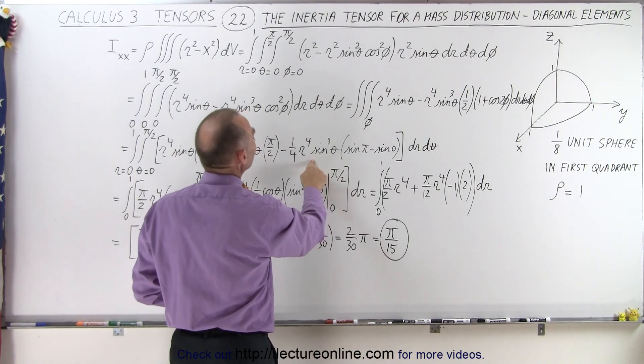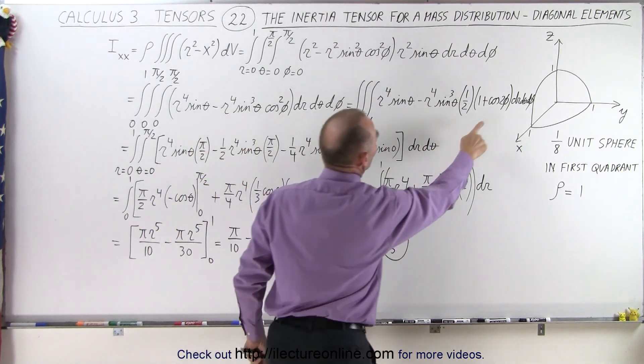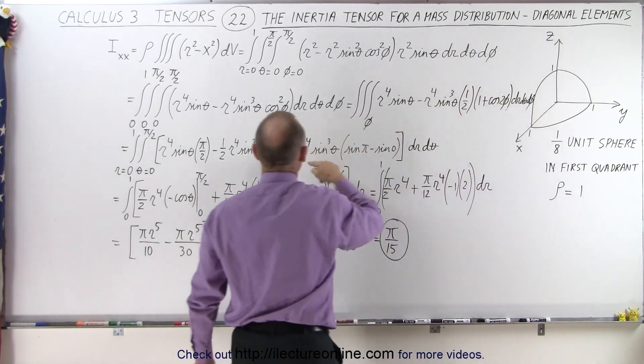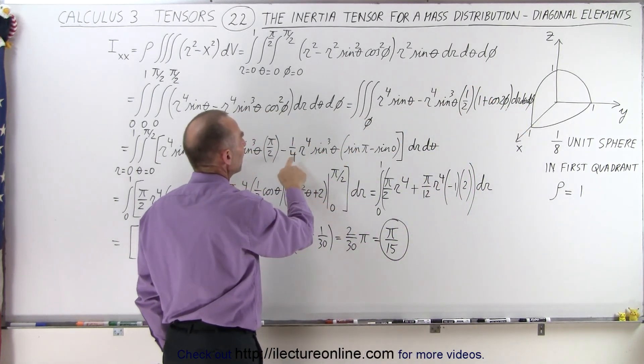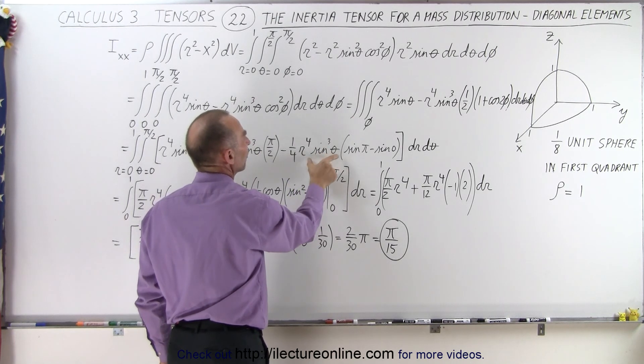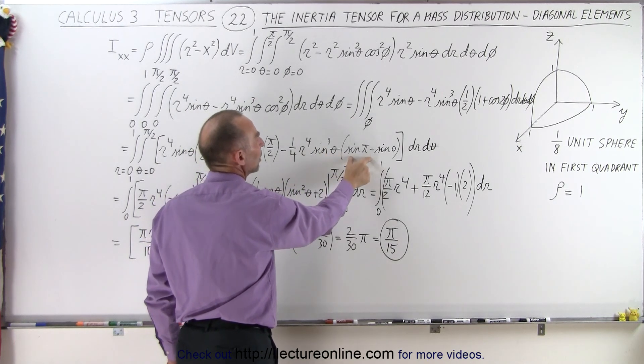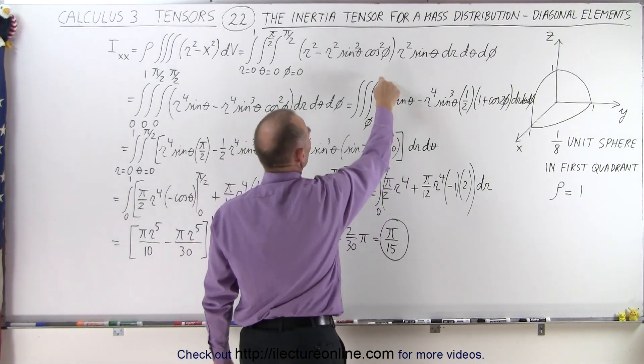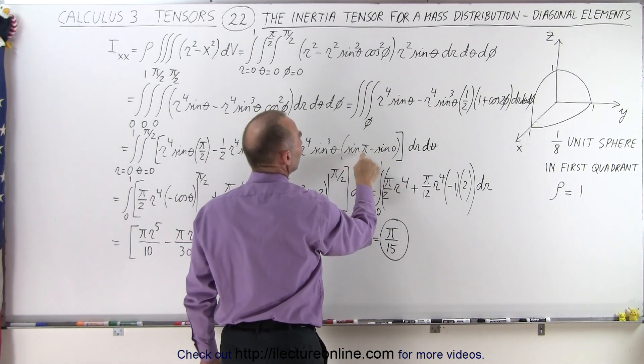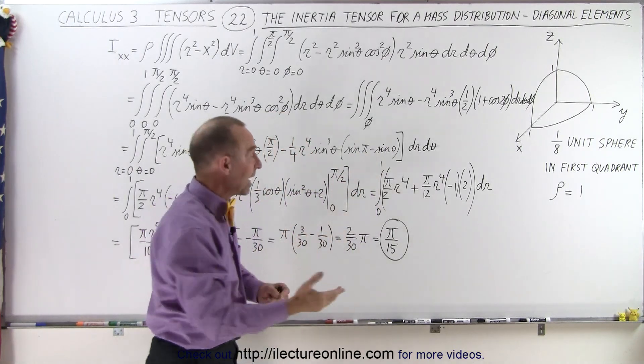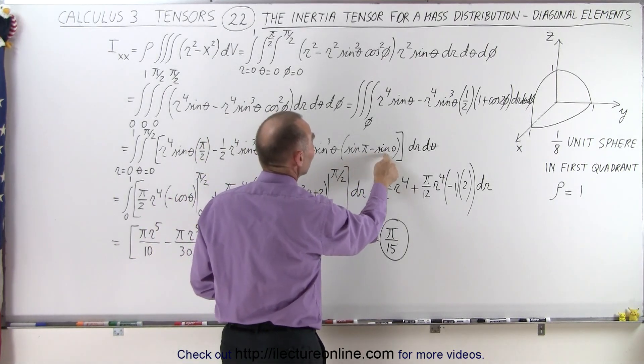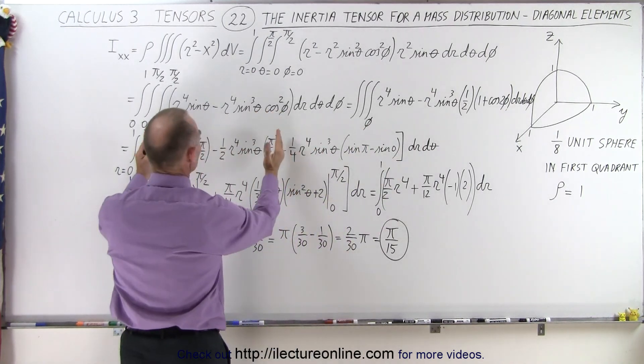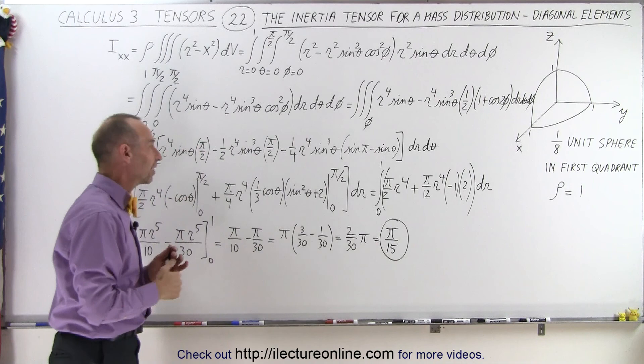Then here, when we integrate, notice that since we have the cosine of 2 phi, we need a 2 d-phi, that gives us 1 over 4. r to the fourth sine cube of theta doesn't change, but here we end up with the sine of 2 phi, and we plug in the limits from 0 to pi over 2, that gives us sine of pi, because it was twice the angle, so sine of pi minus sine of 0. This will become equal to 0, so this whole term here goes to 0, and we're left with these two to integrate on our second integral.